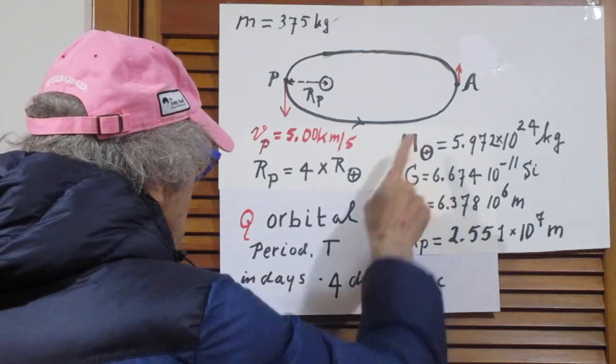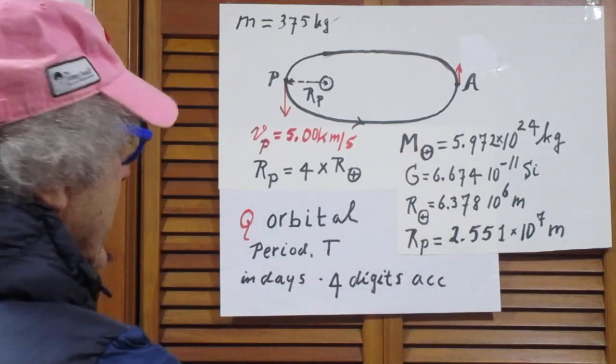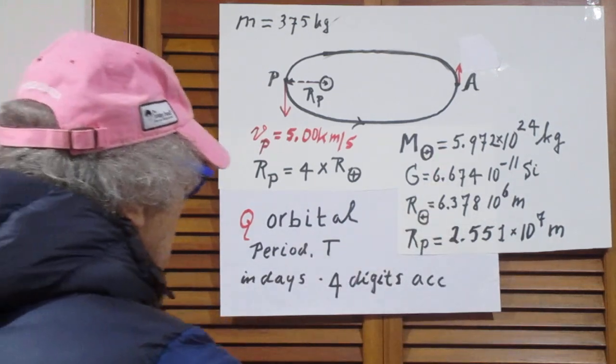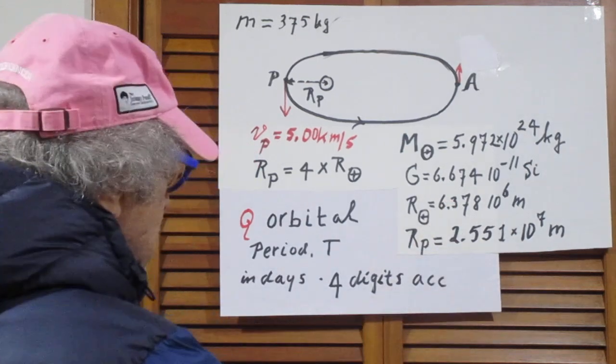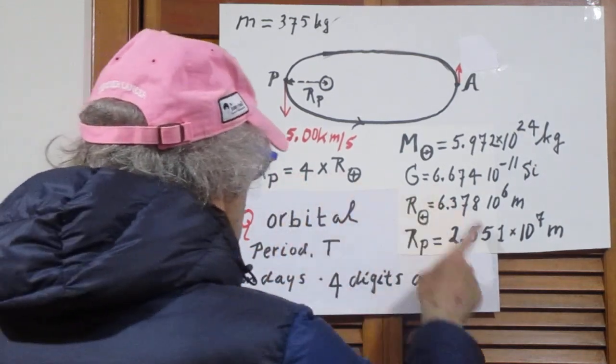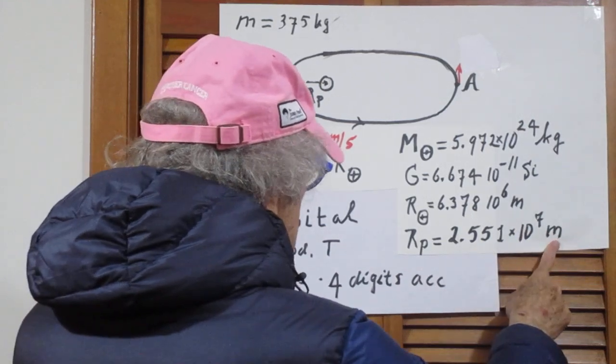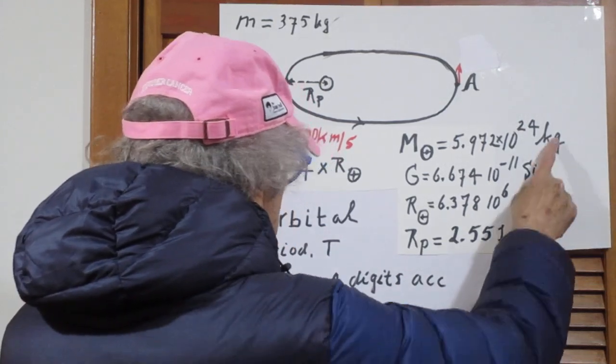This is the mass of the Earth I would like you to use. This is the gravitational constant which I would like you to use. This is the radius of the Earth, and so four times the radius of the Earth is this. This is in meters, SI units, kilograms.